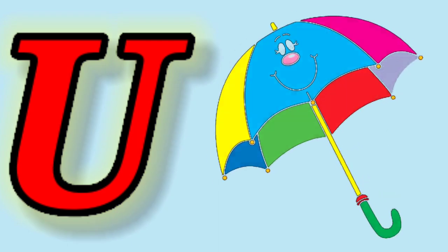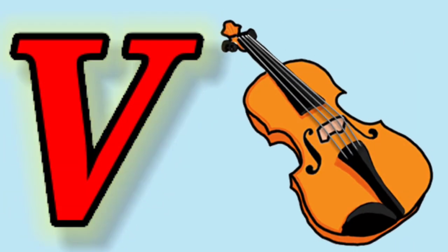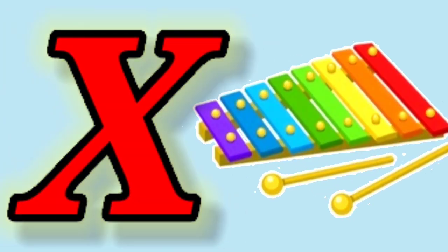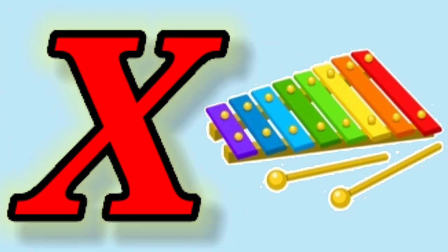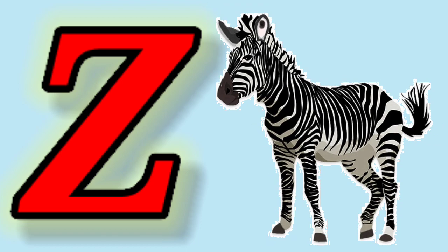U for umbrella, V for violin, W for watermelon, X for xylophone, Y for yap, Z for zebra.